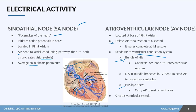Near the end of the conduction path, you get the Purkinje fibers located throughout the ventricular walls. As the action potential is carried from those bundle branches, it's sent out to the rest of the ventricles, producing ventricular contraction — or ventricular systole.